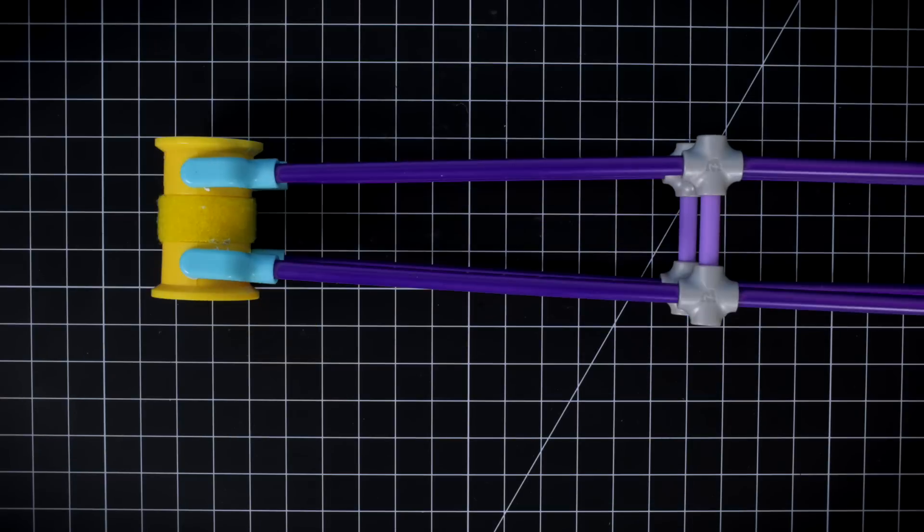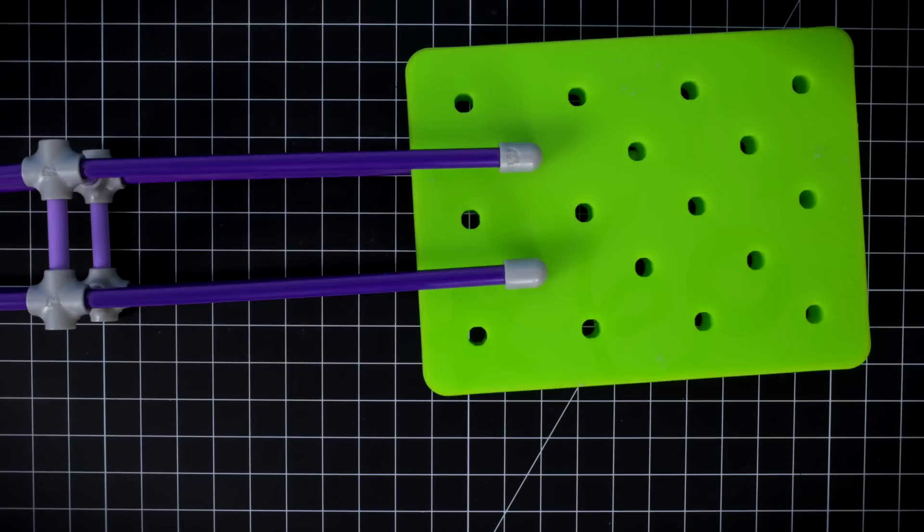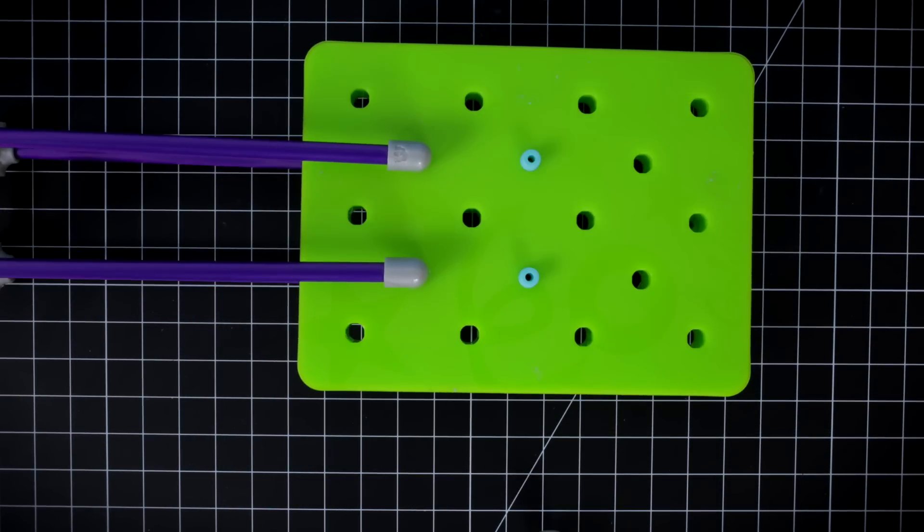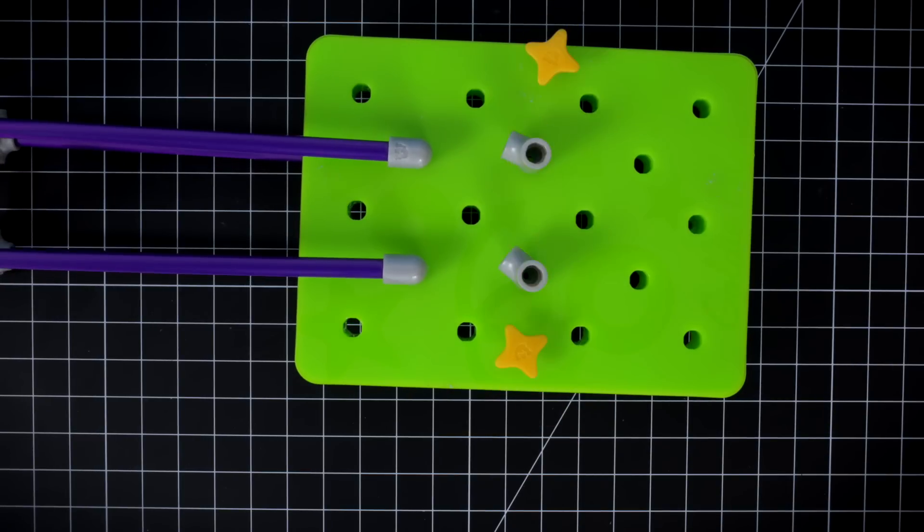Step four. Now it's time to work on the body. Add two pegs to the pegboard. Use two T joints and two star stoppers to complete the pickup.